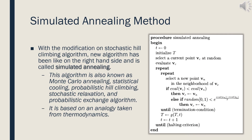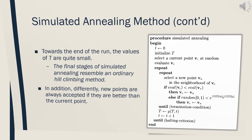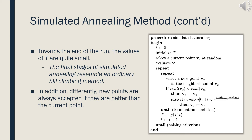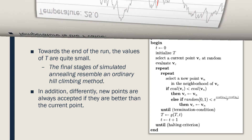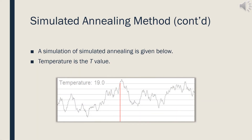The pseudocode of the simulated annealing algorithm is shown on the right-hand side. This algorithm is also known as Monte Carlo annealing, statistical cooling, probabilistic hill climbing, and so on. It is based on an analogy taken from thermodynamics. The values of T are quite small towards the end of the run, so the final stages of simulated annealing become like an ordinary hill climbing method. A simulation of simulated annealing is given in this slide, where temperature is the T value.